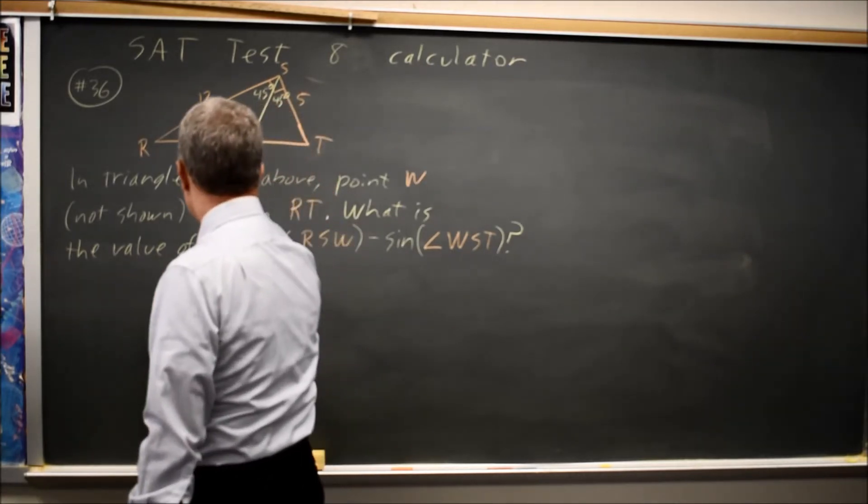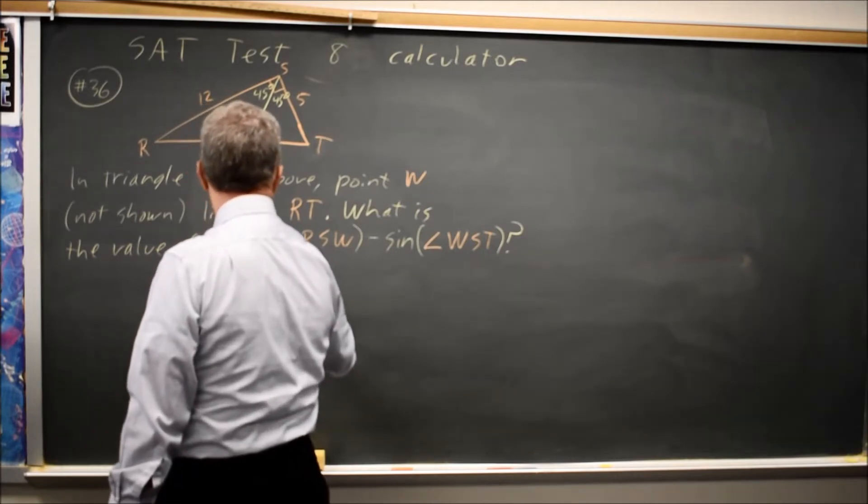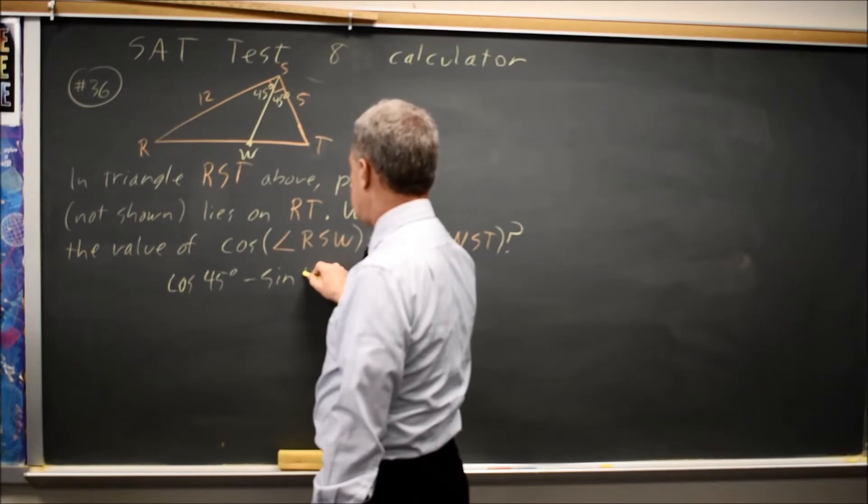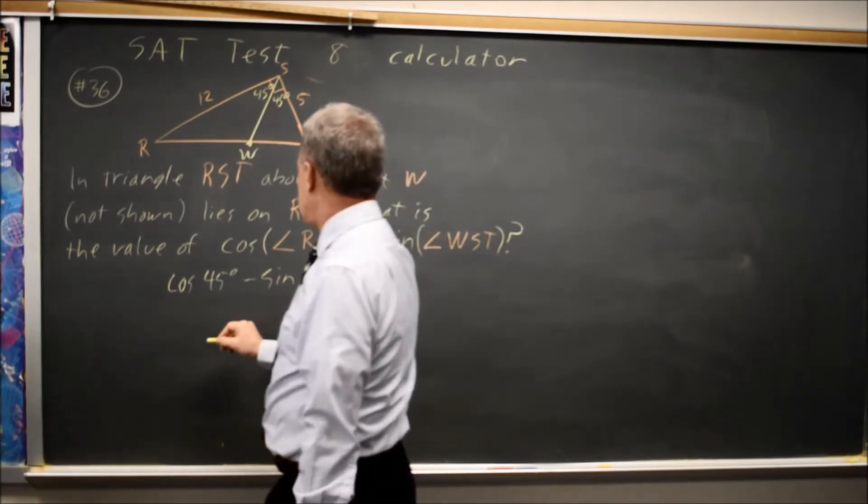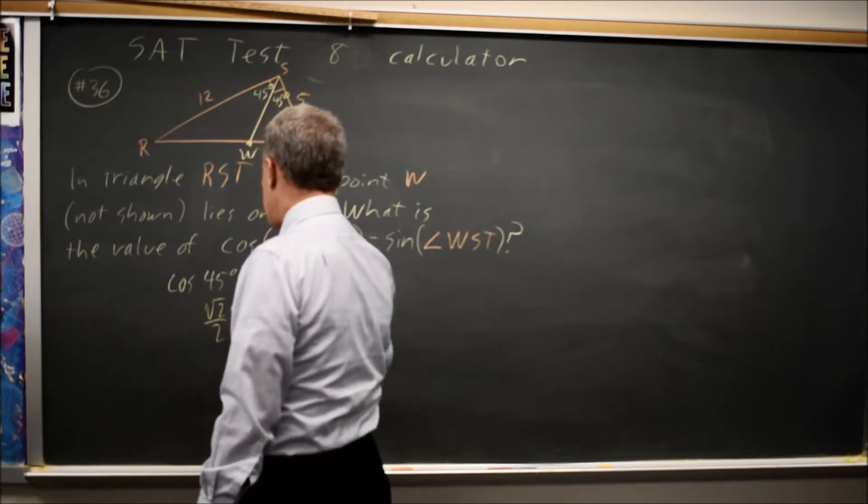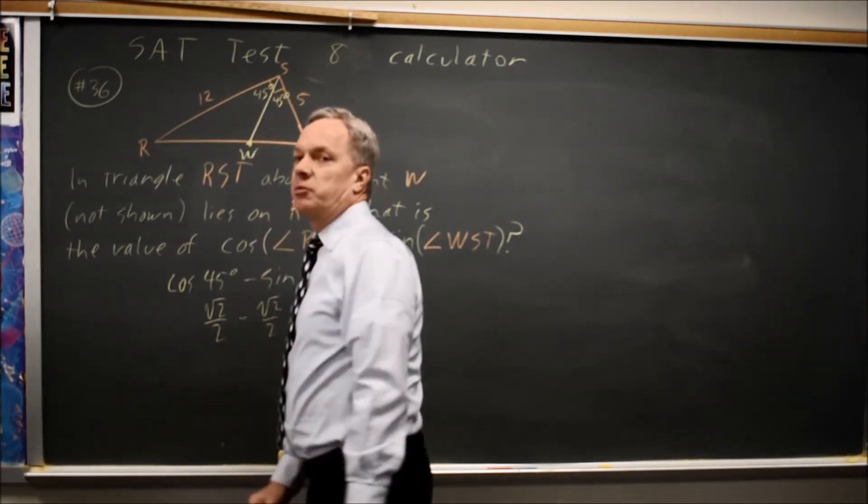In that case, the cosine of 45 degrees minus the sine of WST, which is also 45 degrees, that is root 2 over 2 minus root 2 over 2 equals 0. So 0 would be my answer.